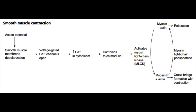The key to understanding smooth muscle contraction is to remember that when myosin is phosphorylated, it's much more likely to interact with actin and you'll get contraction. Just remember that when myosin gets phosphorylated it's more likely to interact with actin and you're more likely to get contraction.